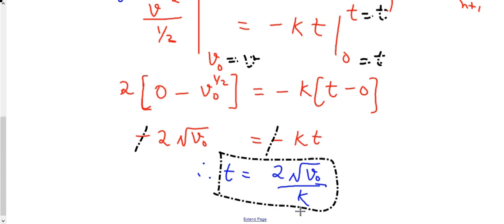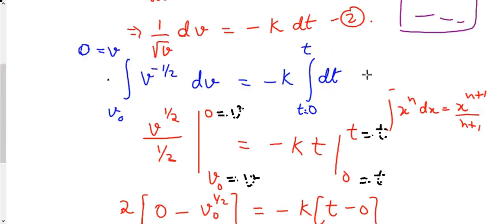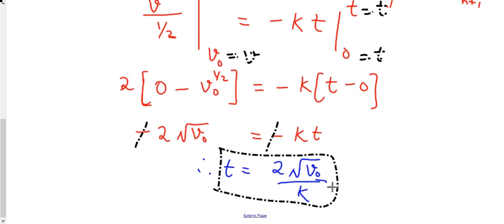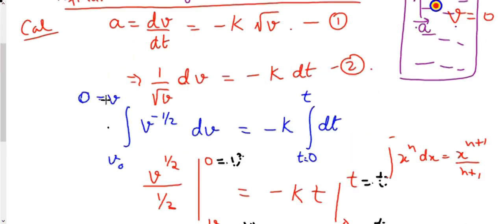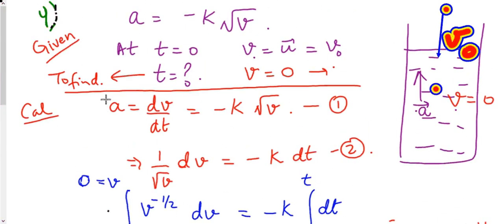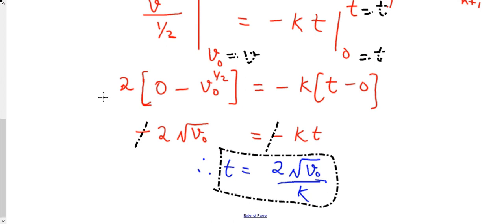At time t = 2√v₀/k, the body's velocity becomes zero and it stops going further down into the liquid. Please pause, solve, rewind, and take note. Do not proceed until you have written this down.